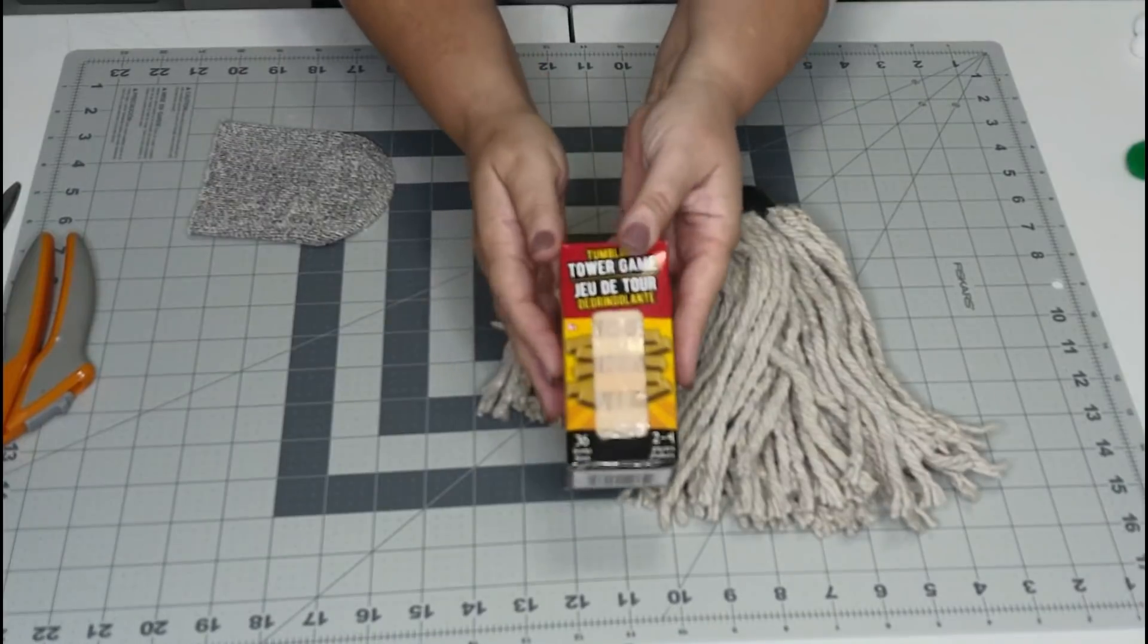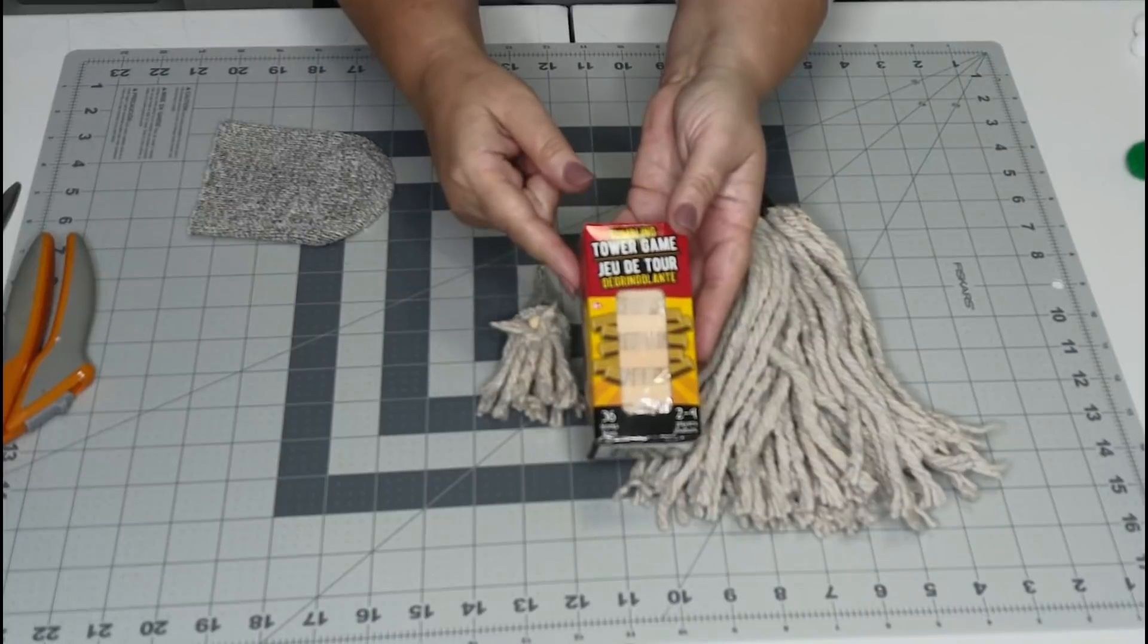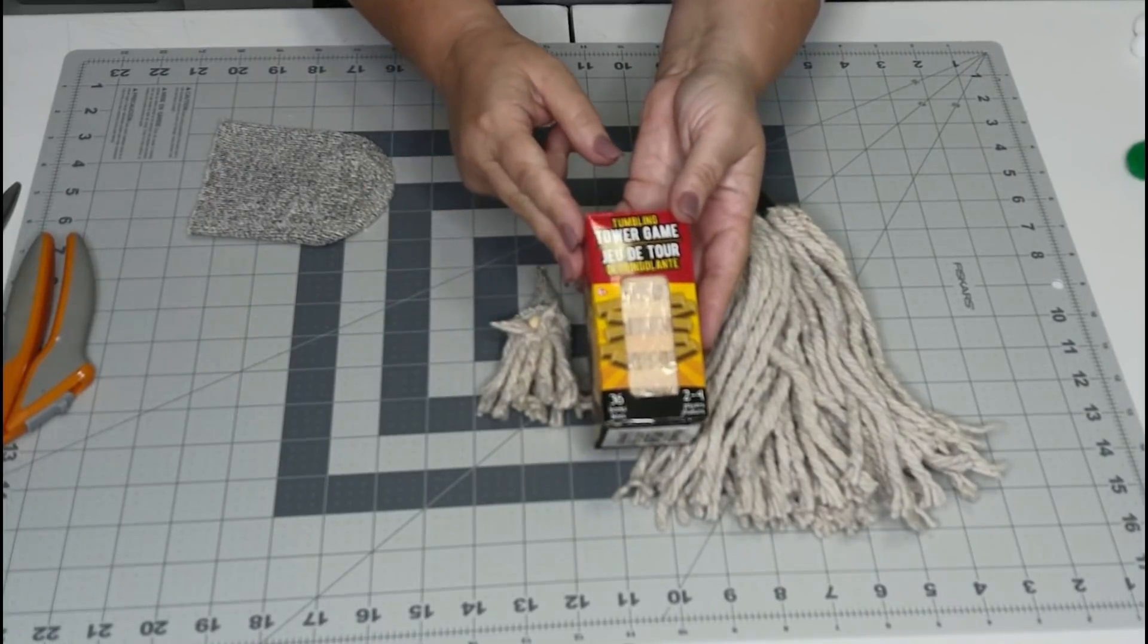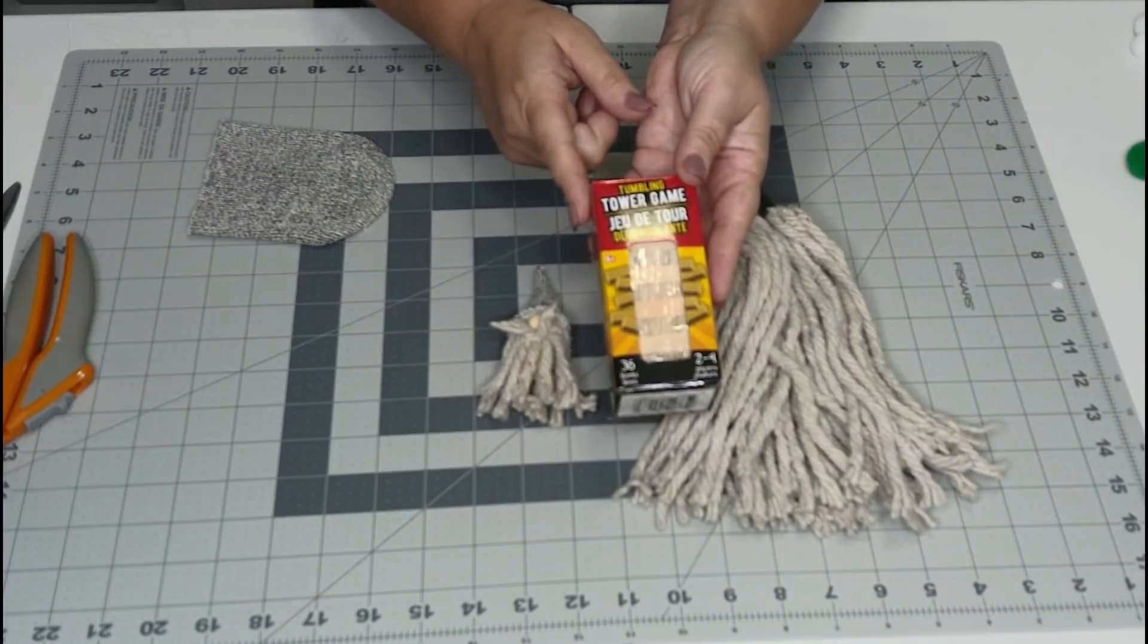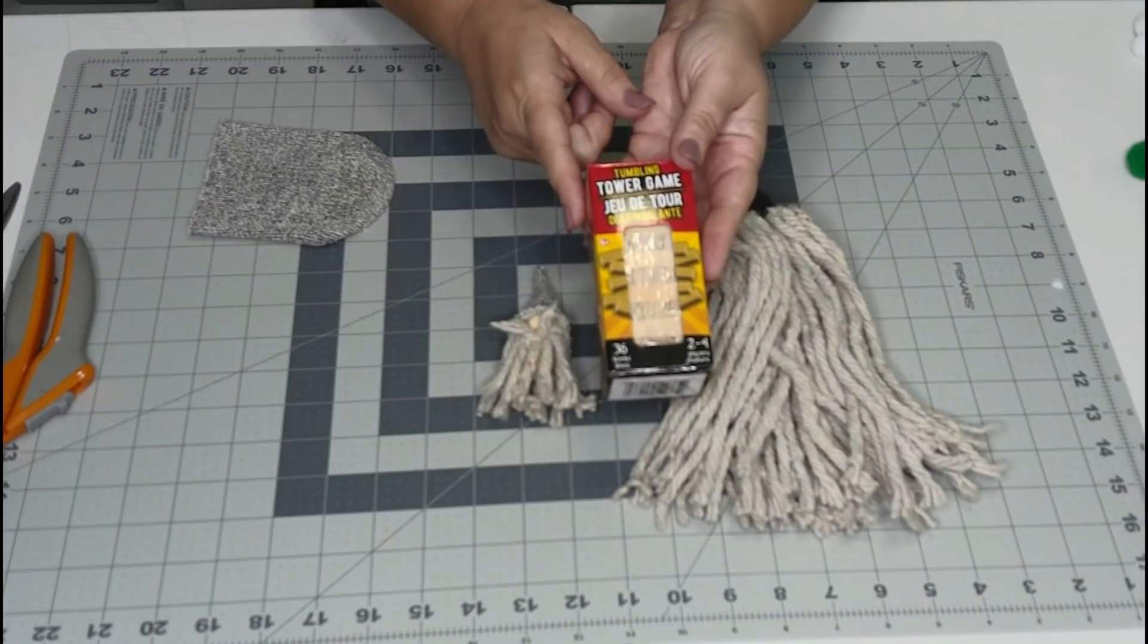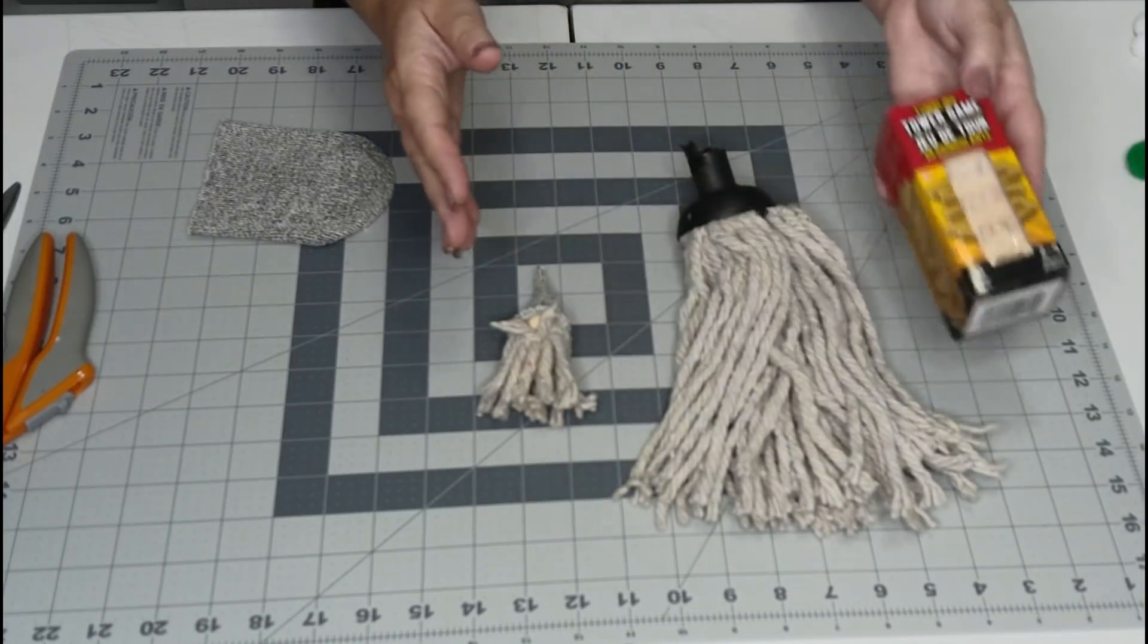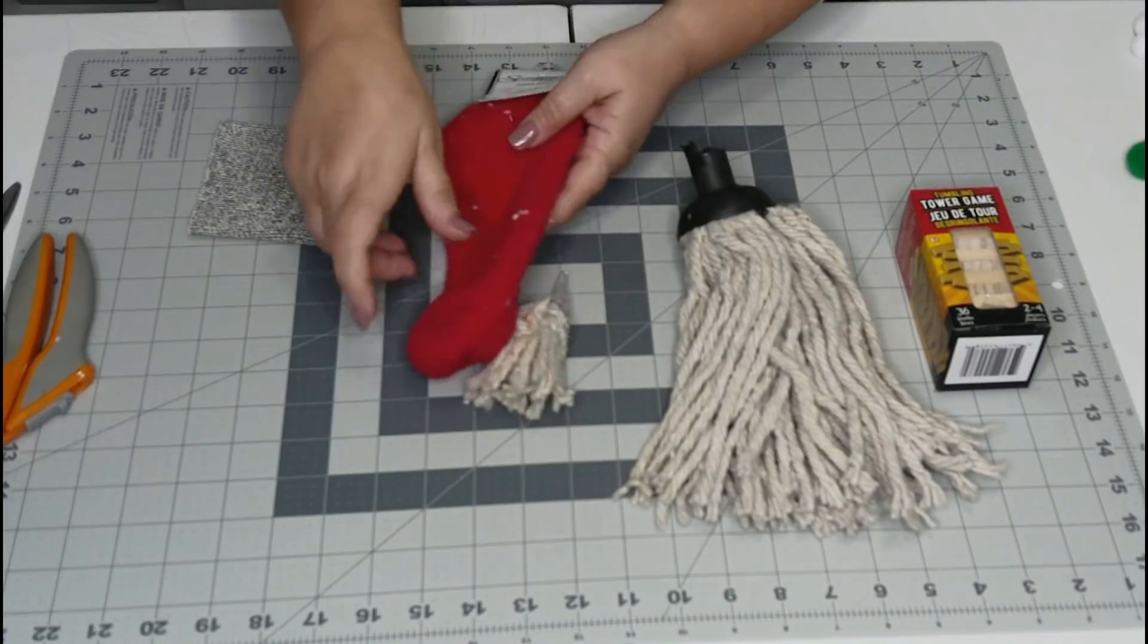We're also going to need one of the towering games, the little mini Jenga games from Dollar Tree. If for some reason your Dollar Tree doesn't have these, you can sometimes find them at Dollar General. And we're also going to need a couple of socks.